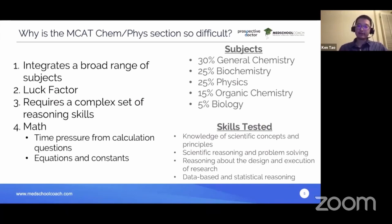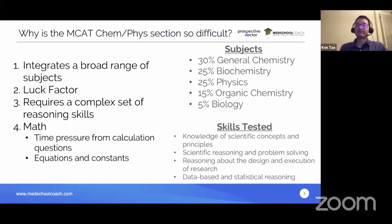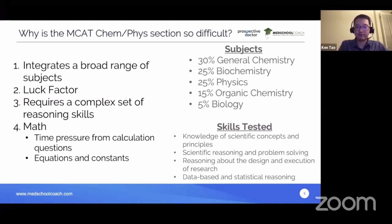Fourth, the ChemFIS section has more math than any other section of the MCAT. Math takes time, and for students where math is a weakness, running out of time is very common. Related to this is memorization: sometimes the MCAT provides the equations and constants you need, but sometimes you're expected to have them memorized. All of these factors combine to make the ChemFIS section particularly challenging.